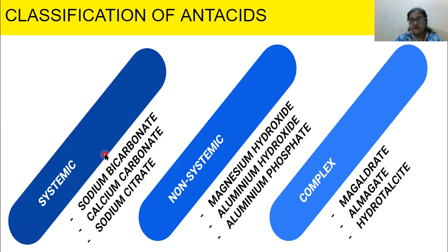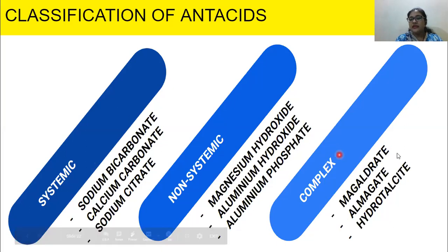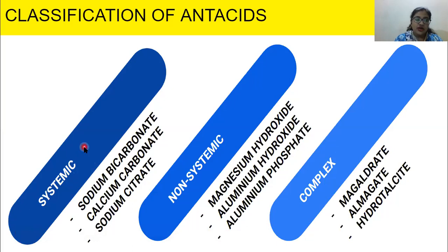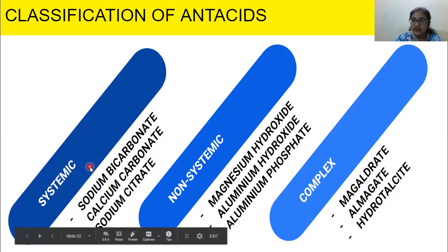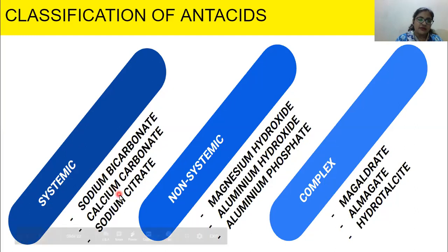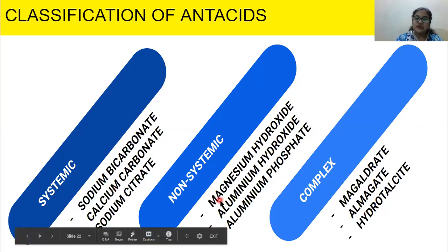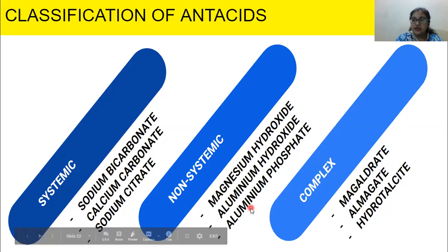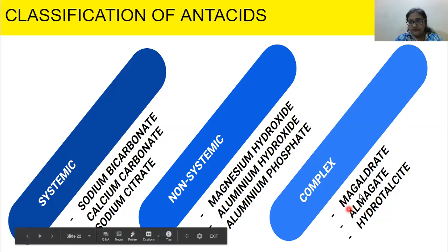Antacids are classified into three major classes: systemic, non-systemic, and complex. Systemic antacids are absorbed into the blood; non-systemic ones are not absorbed. Systemic antacids include sodium bicarbonate, calcium carbonate, and sodium citrate. Non-systemic include magnesium hydroxide, aluminium hydroxide, and aluminium phosphate. Complex antacids such as magaldrate contain a combination of these agents.